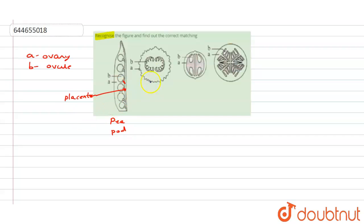Coming to next one, which placentation is here? This is axile placentation, this is marginal, and this is parietal. And in pea pod, marginal placentation is there.